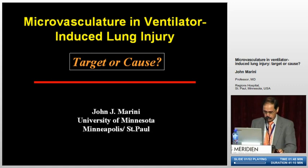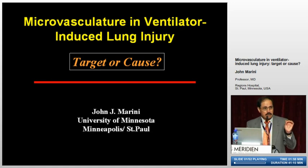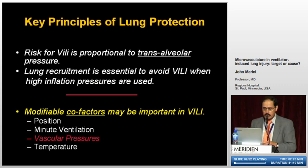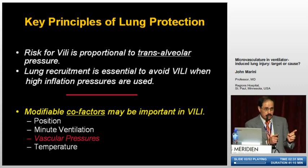So I'm asking the question: if we concentrate on the vasculature, is it the target of ventilator-induced lung injury? Or are manipulatable factors related to the microvasculature what we can use to eliminate ventilator-induced lung injury, or at least reduce its severity?